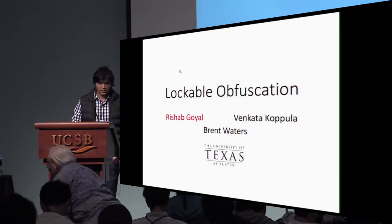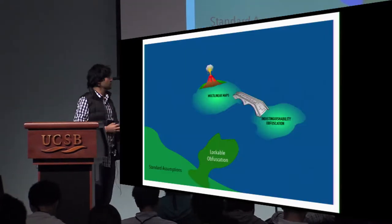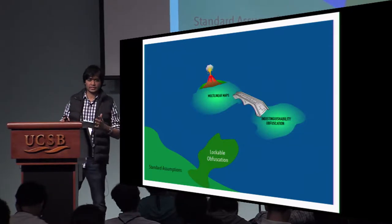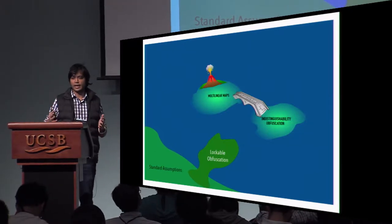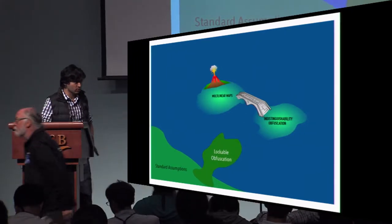I'll be talking about lockable obfuscation. As we know, in the past few years, we have seen that indistinguishability obfuscation has been really powerful, with it being labeled as the holy grail of modern cryptography.